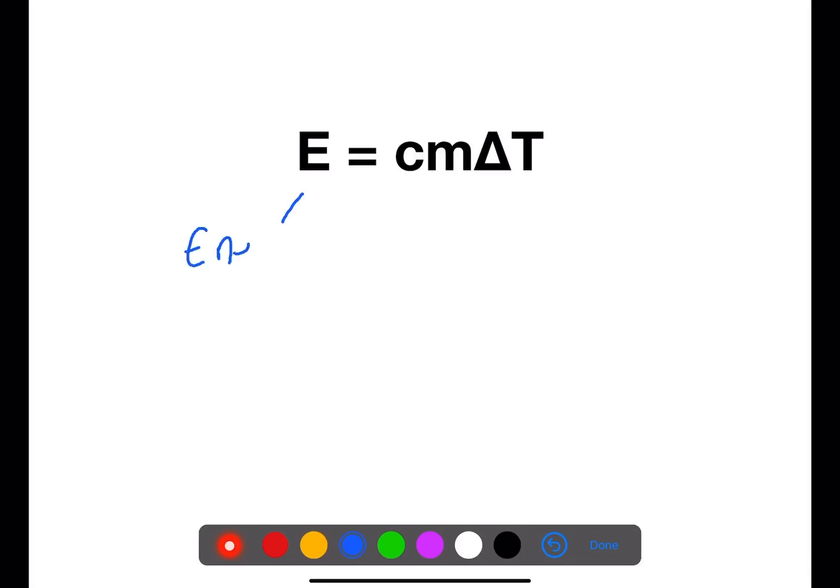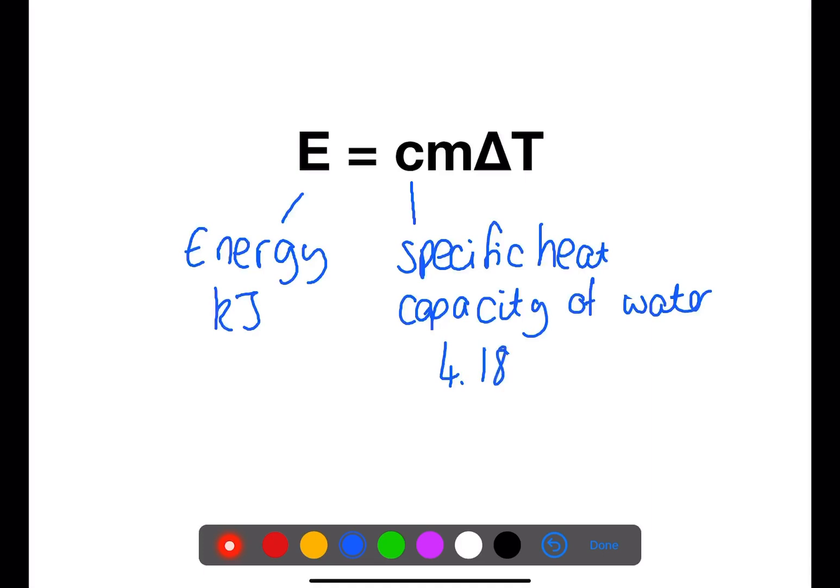First let's look at the equation. We use the equation E equals CM delta T, where E is energy in kilojoules, C is the specific heat capacity of water which is given the value of 4.18 kilojoules per kilogram per degree C. You can find this in your databook.